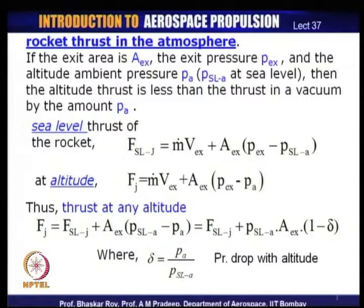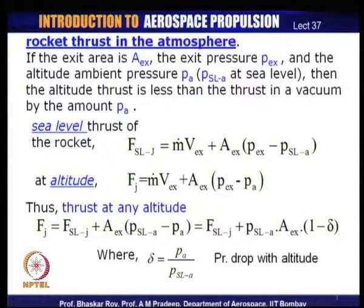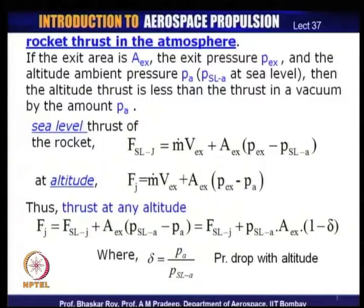If we write a generalized version of thrust at any altitude: F_j equals F_SLj plus F_AEx times (P_SLA minus P_A). This simplifies to a second term with (1 minus delta), where delta is the pressure drop with varying altitude of operation. Delta can be obtained from standard atmospheric charts or tables and is a comparatively easily knowable parameter. The basic thrust any rocket creates can now be obtained from this simple equation.